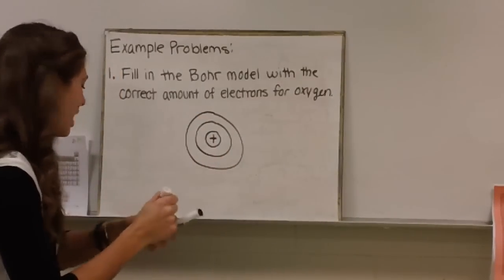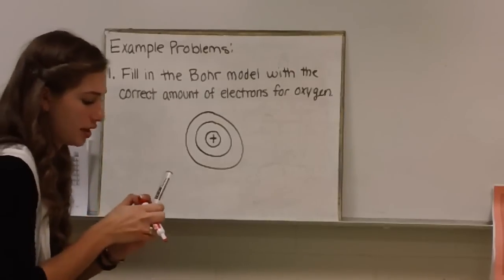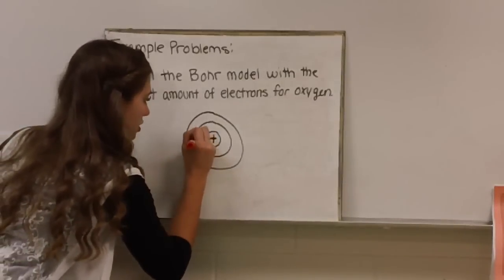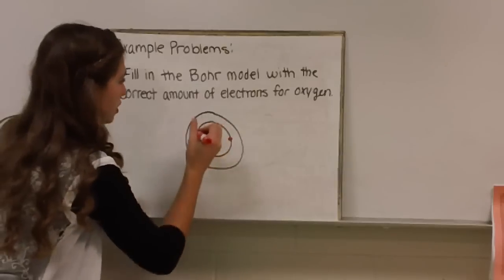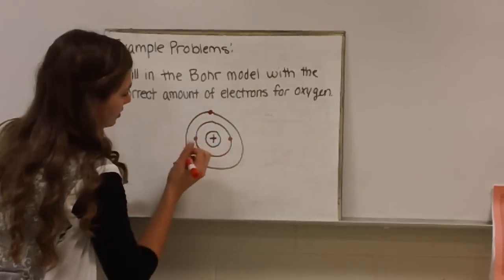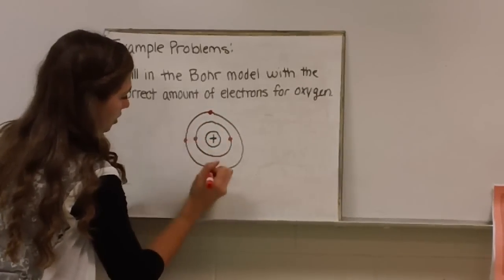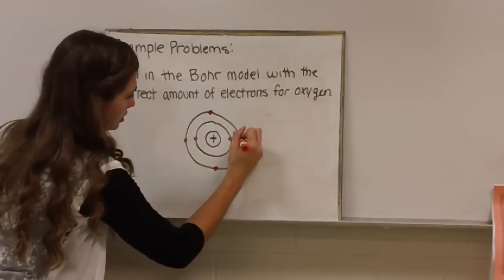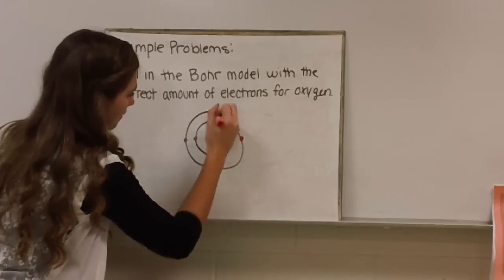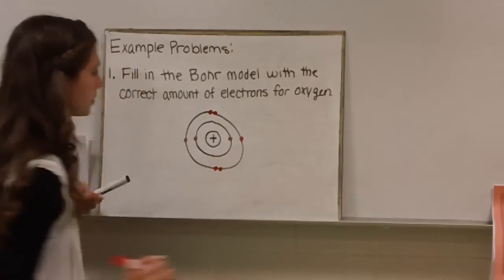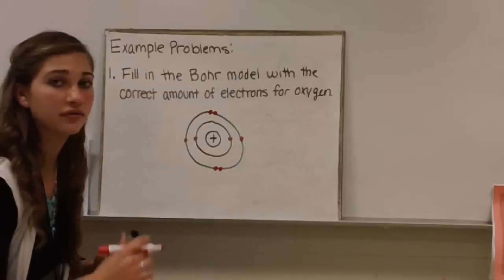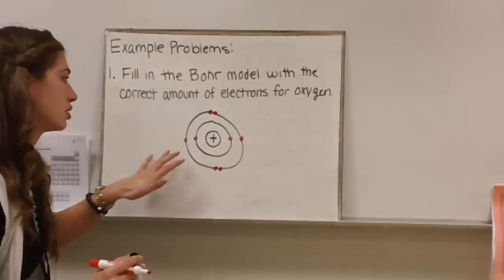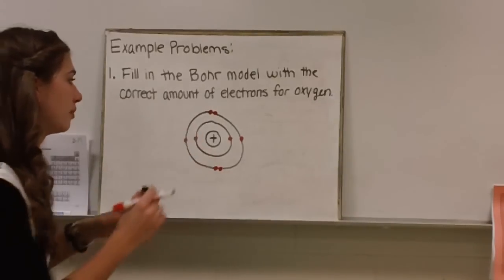It has eight electrons. You're going to start on our first level. That's two. And we need to start filling in our outside one. Three, four, five, six, seven, eight. So this would be the Bohr model for oxygen. It has eight electrons filling in from the inside out.